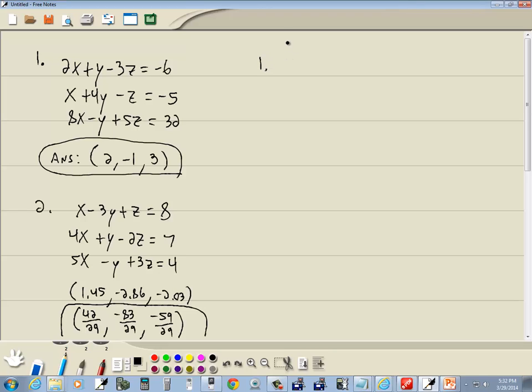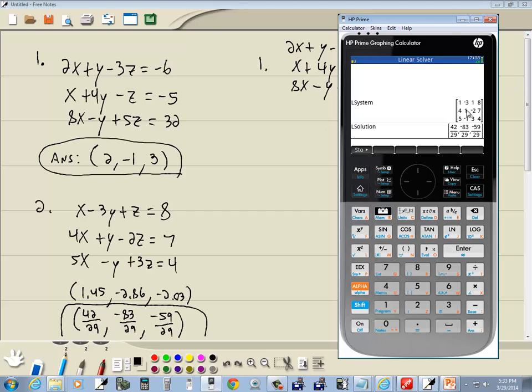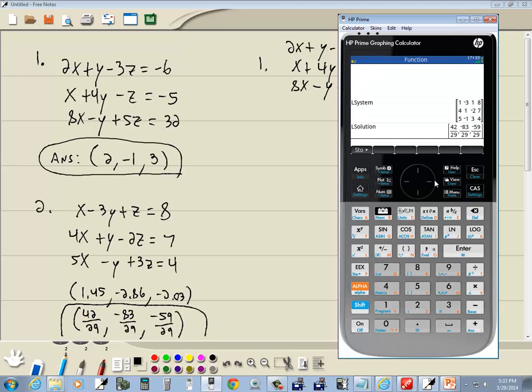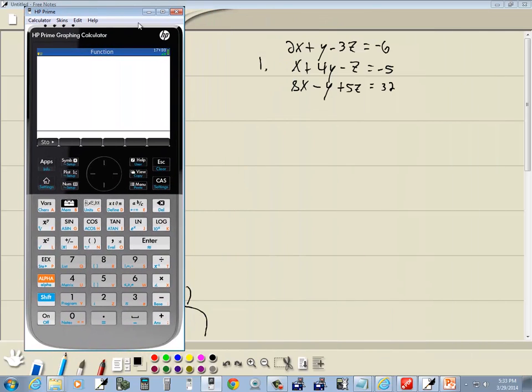Well, let's go back and rework these. So I've got 2x+y-3z=-6, x+4y-z=-5, 8x-y+5z=32. Now, these actually used matrices to do this, but they did them behind the scenes so we wouldn't have to see it as much. It probably doesn't matter what mode we're in when we do this. But I'm going to go to apps, choose function, press enter, and then press my home to go back here.